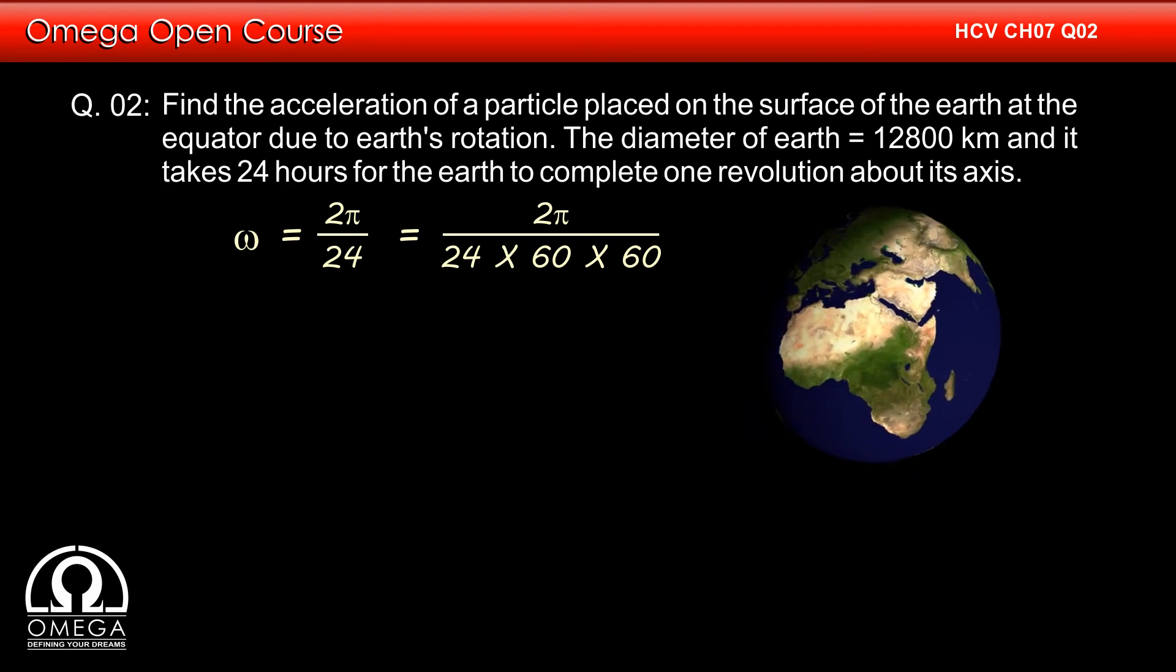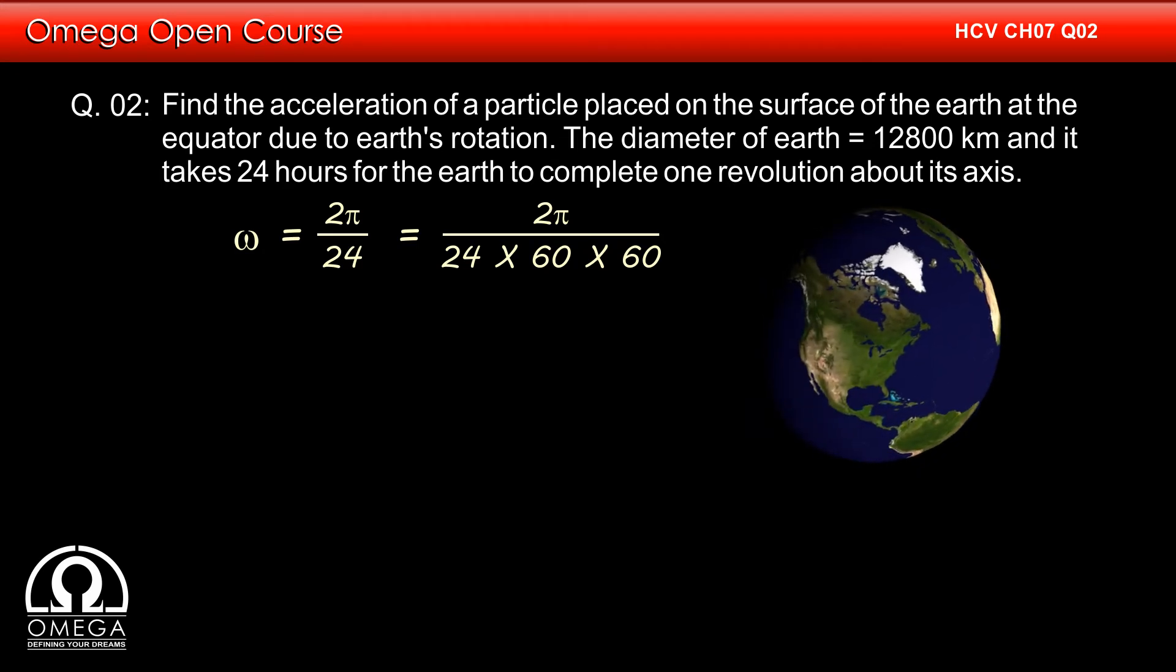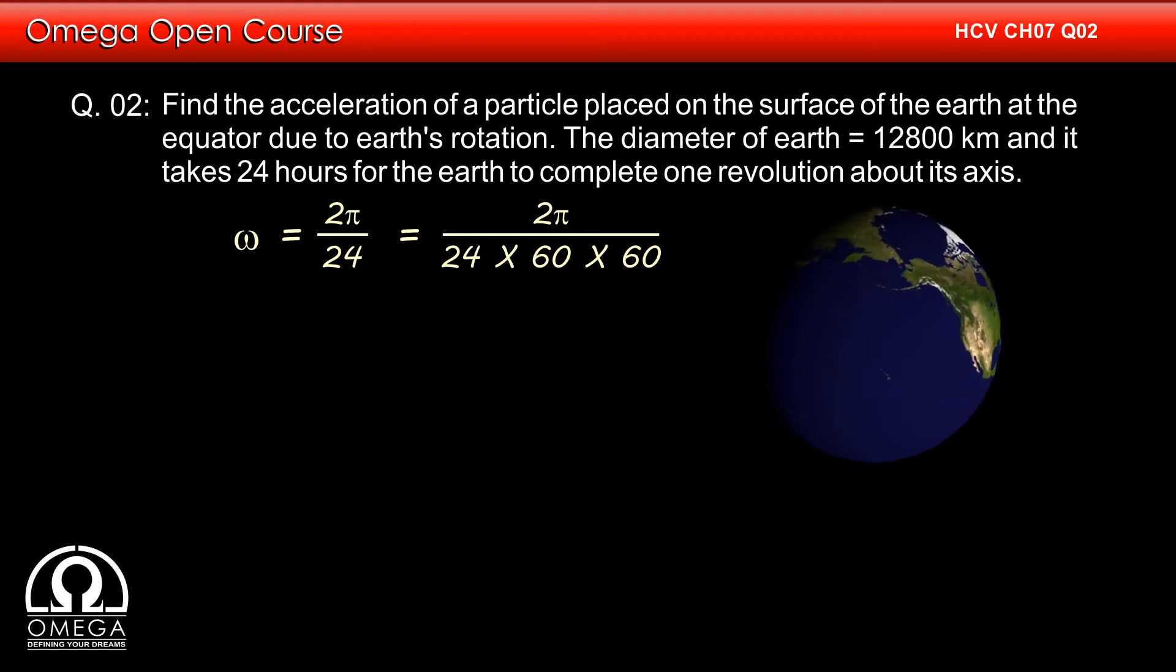Since the particle is kept at the equator, it rotates with the Earth in a circular path with radius equal to the radius of the Earth.